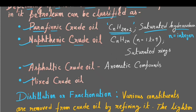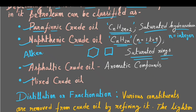The next type is naphthenic crude oil, which means saturated rings like cyclohexane or cyclobutane. The general formula for saturated rings is CnH2n, where N is from 1 to 9. Note that this general formula CnH2n is also applicable for alkenes like ethylene (C2H4), but these alkenes are not rings — not in a circular shape. Please remember the difference: one is alkene and another is a saturated or naphthenic ring.